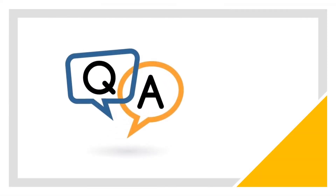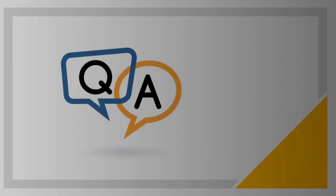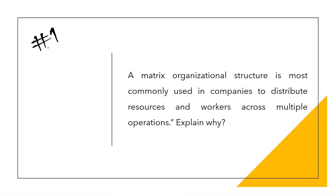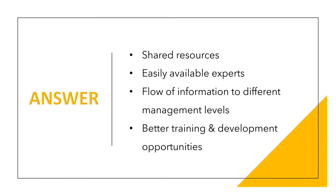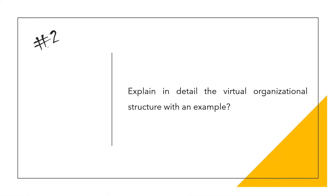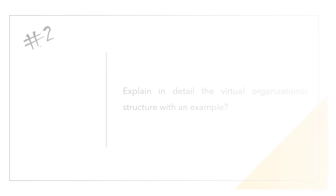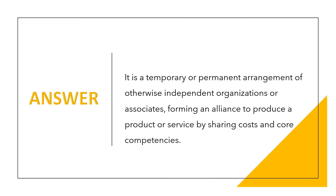Important questions for this topic: First, a matrix organizational structure is most commonly used in companies to distribute resources and workers across multiple operations — explain why. Second, explain in detail about virtual organizational structure with a relevant example.